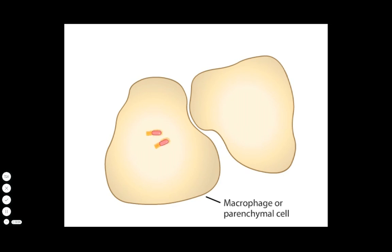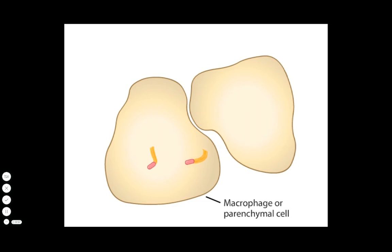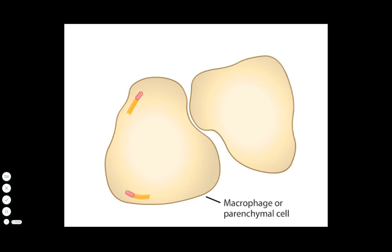Shortly after entry into the cytoplasm, Listeria bacteria begin to nucleate actin filaments. Eventually, actin tails develop and the polymerization of the filaments pushes the bacteria through the cytoplasm.